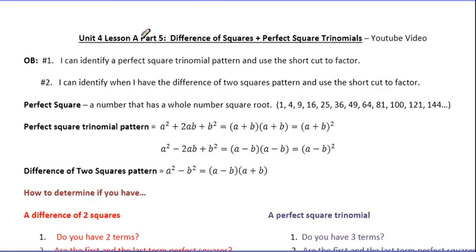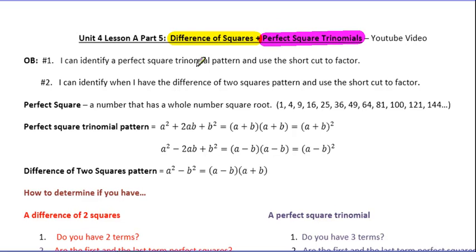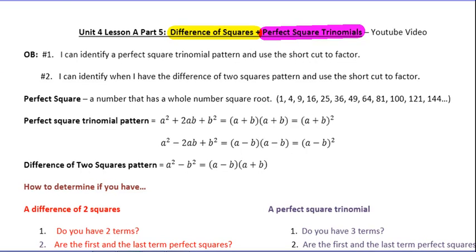Unit 4, Lesson A continued. This is Part 5. We're going to learn about some special factoring here — one called Difference of Squares Factoring, the other called Perfect Square Trinomials. These two patterns can help shortcut or factor a binomial if it's Difference of Squares, or shortcut AC factoring in a very specific situation. Two objectives for today: number one, identify Perfect Square Trinomials and use the shortcut to factor; number two, identify the Difference of Two Squares pattern and use it to factor a binomial.